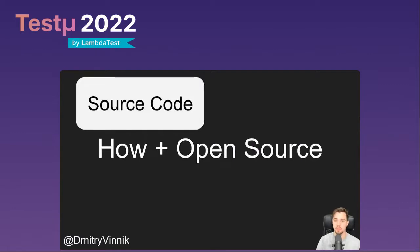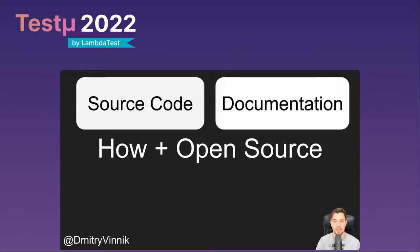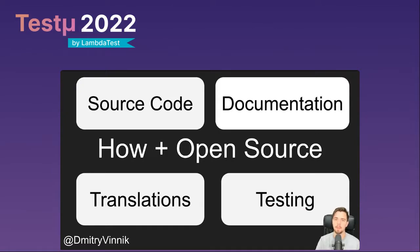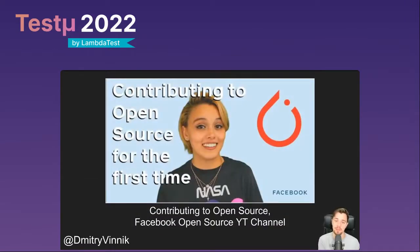How do people contribute to open source? Through source code — actually making changes to the codebase. Through documentation — every contribution matters whether it's code or docs, and it's important for people who may not know how to code. Translations — maybe you know a second language and can help translate documentation. And testing — people often focus on development and forget about testing, but testing drives the software development lifecycle and is very important for open source.